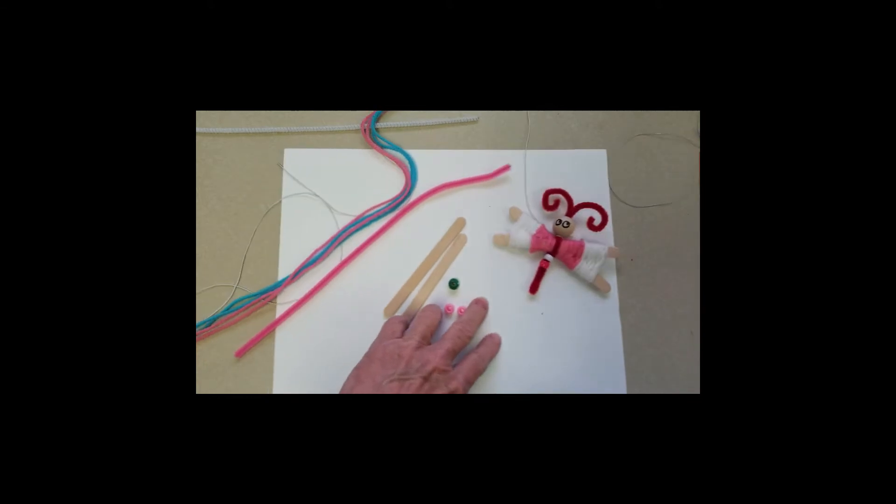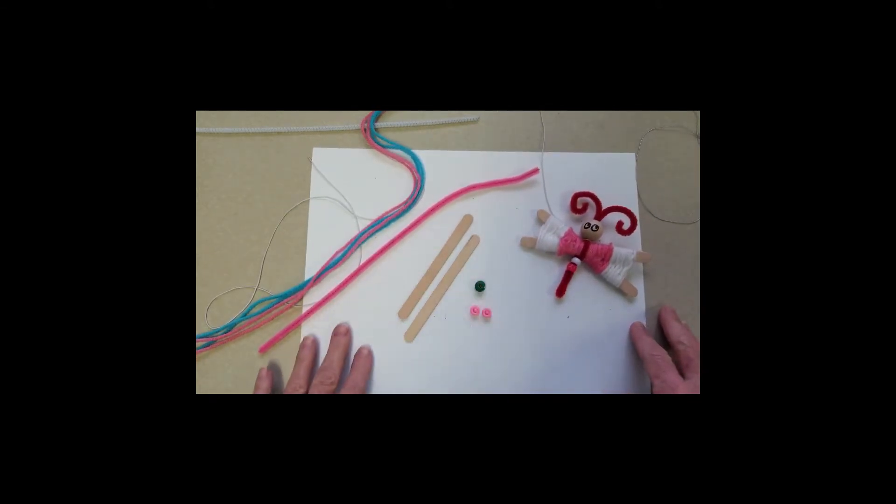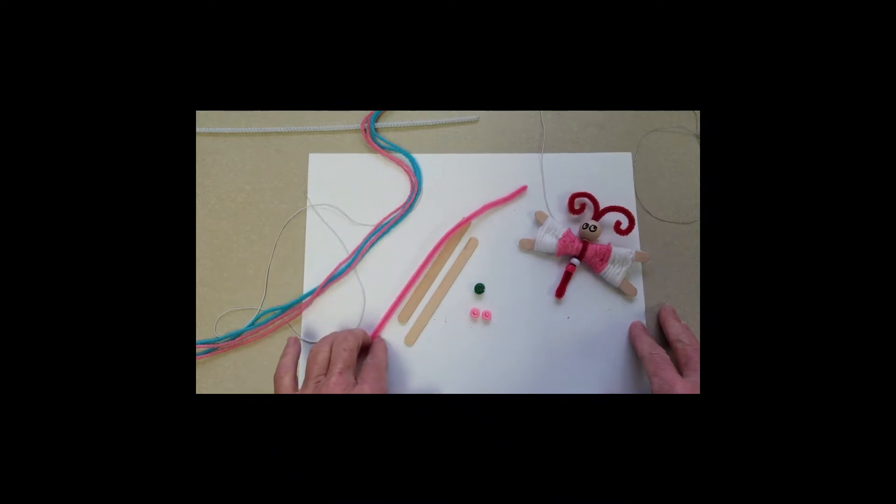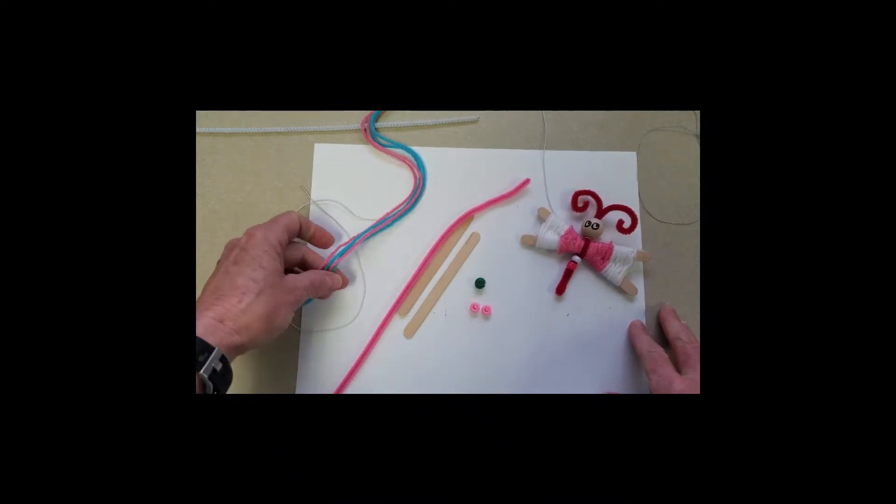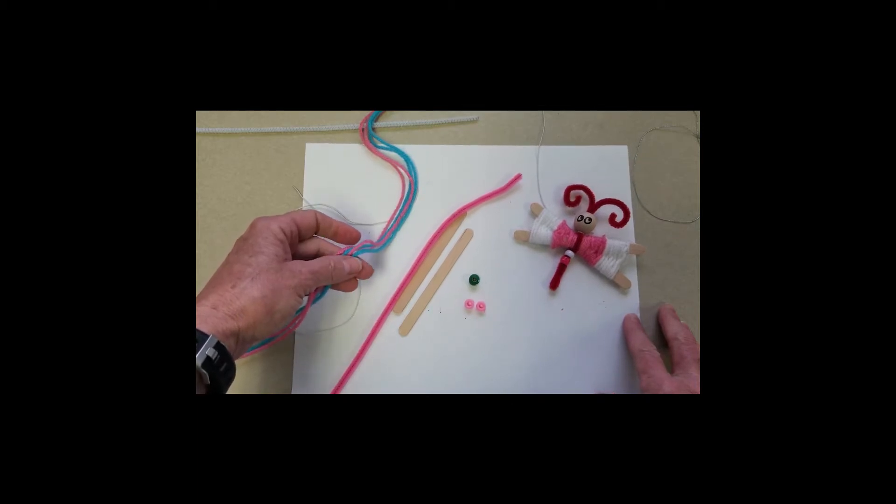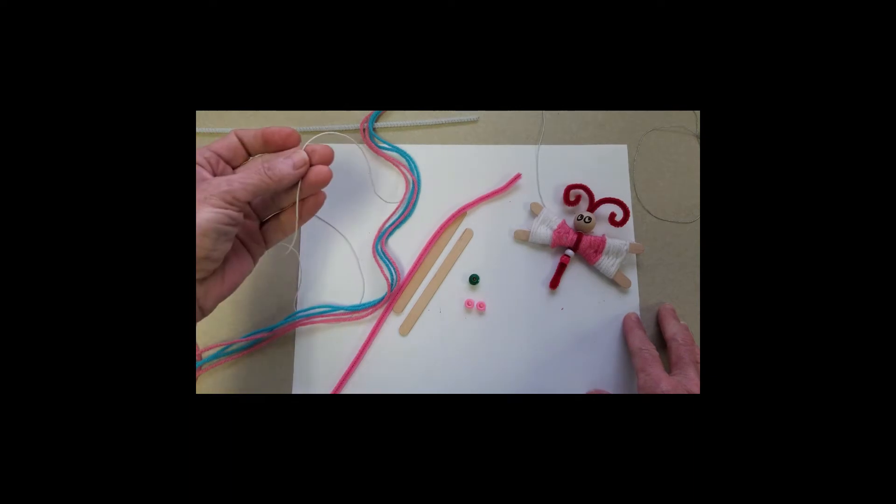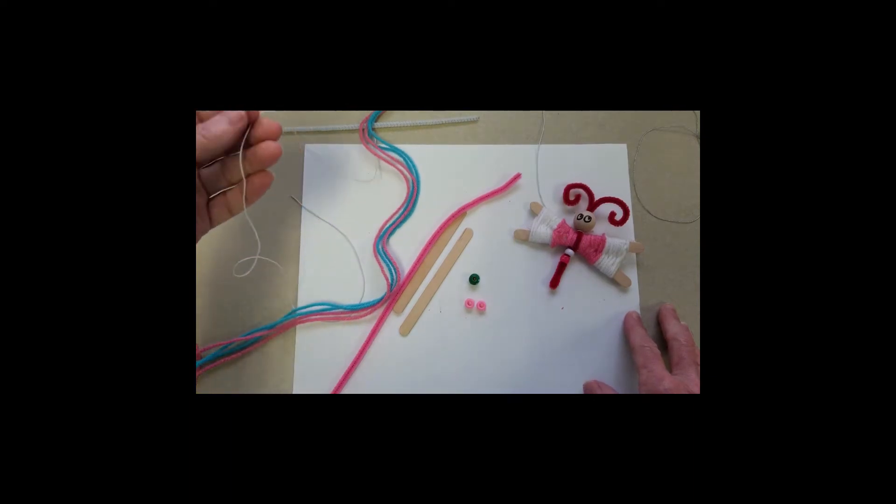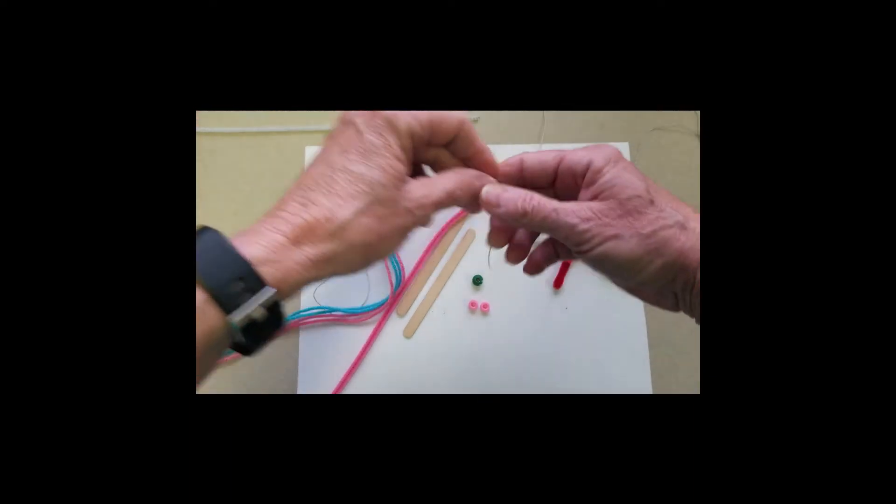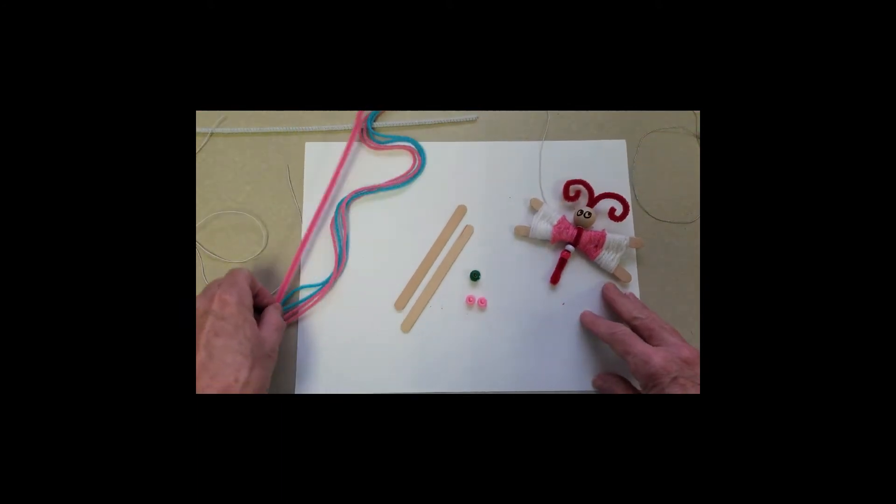All you're going to need today is two popsicle sticks, three beads, one pipe cleaner, and four pieces of string about two to three feet long. If you have a piece of elastic you can use that, but you could always cut a rubber band and use that too if you wanted it to be bouncy. Now let's go ahead and get started.